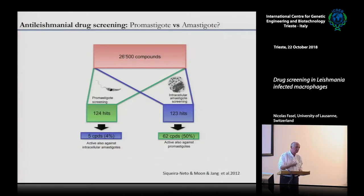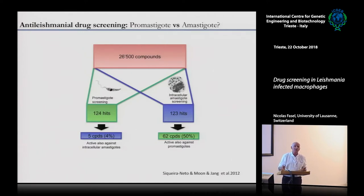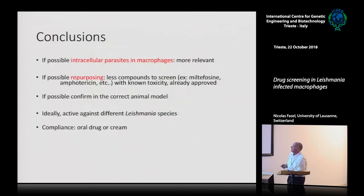Clearly, if you want to develop or find a drug, you should forget about promastigotes — at least go for axenic amastigotes, and if possible intracellular amastigotes, even though that makes the screen much harder to set up. Going for intracellular parasites in macrophages is more relevant because you also deal with the metabolism and the effects of the macrophage.